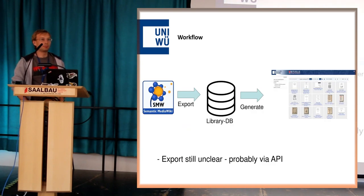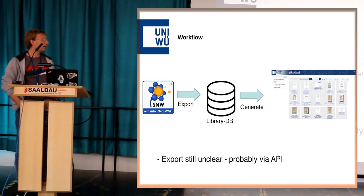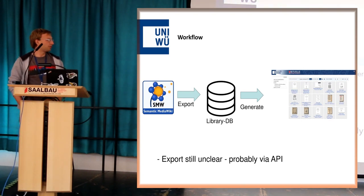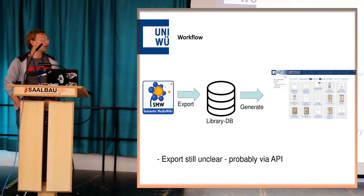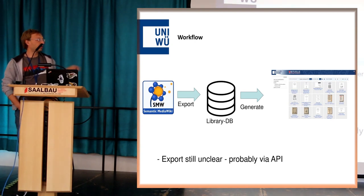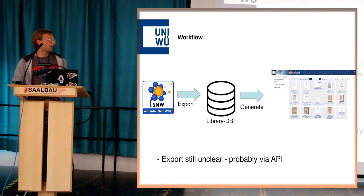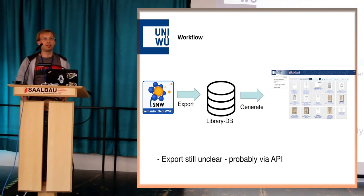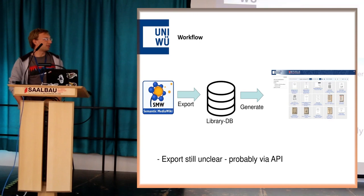After the work is done in SMW, we have to export the data — it's not fully decided yet how we'll do it, but I think we will use the API. We dump the data into our library database and then automatically generate from that database a website, which is part of the university website, where you can view the pictures, the metadata, and all the related content. Of course you can also download this data in different formats.